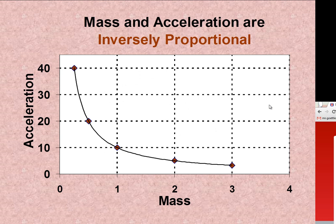When we graph inversely proportional variables, we get a graph that looks like this. And we can see here that when the mass, let's look at the mass here. The mass is 0.5. When it doubles to 1, the acceleration became half of what it was. The acceleration went from 20 to 10.